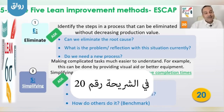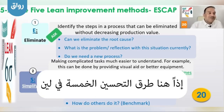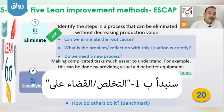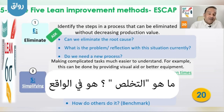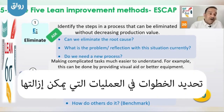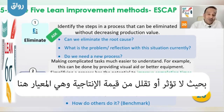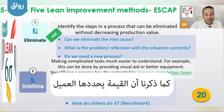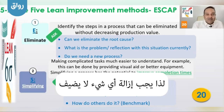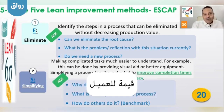Welcome to all. Now we are in slide number 20, so the fifth lean improvement method is CAP. We will start with 'eliminate' — identifying the steps in progress that can be eliminated without decreasing production value. As we said, the value is determined by the customer, so you will eliminate whatever step that does not add value for the customer.